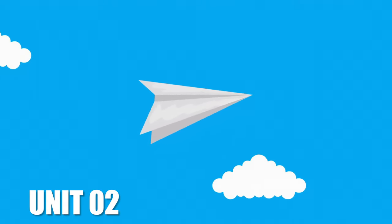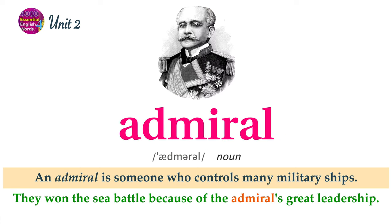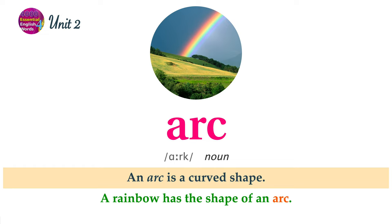Unit 2 Word List. An accident is an unexpected, undesirable event. She had to go to the hospital after she was in a serious car accident. An admiral is someone who controls many military ships. They won the sea battle because of the admiral's great leadership. An arc is a curved shape. A rainbow has the shape of an arc.